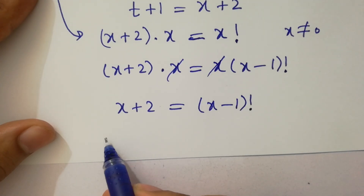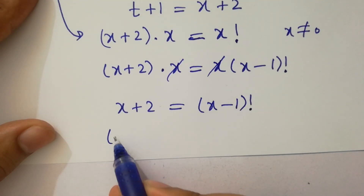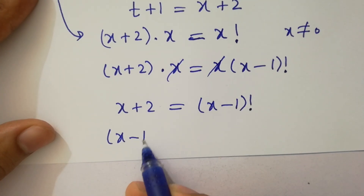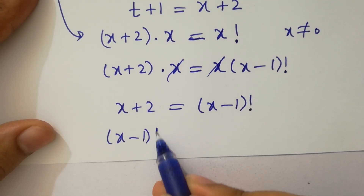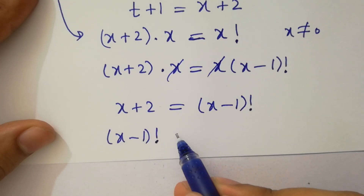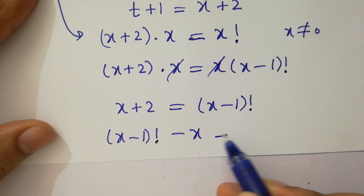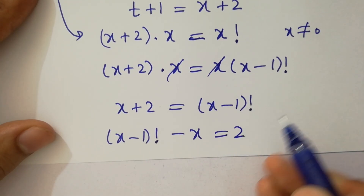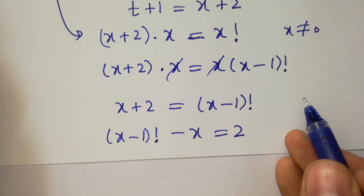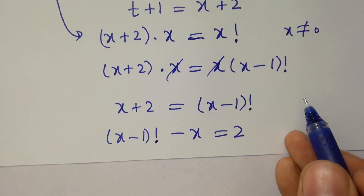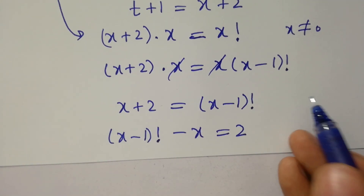This simplifies to (x-1) factorial minus x equals 2, where x must be greater than or equal to 1.